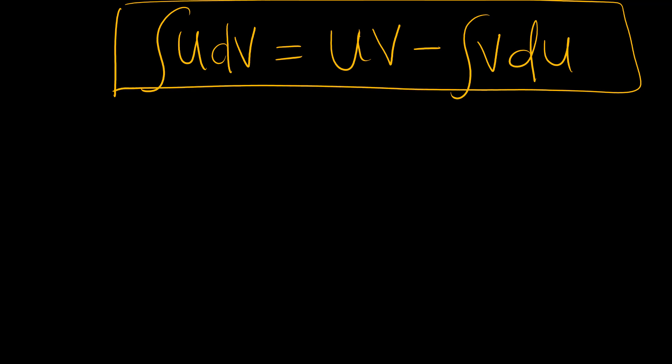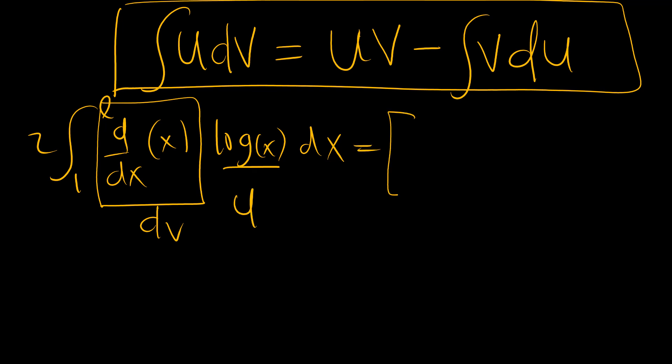So applying this to our problem, with this being dv and this being u means that we have uv being x natural logarithm of x. We have 2 here. So this is uv, 1 to e minus 2, v is going to be x. The derivative of natural logarithm of x is 1 over x from 1 to e.